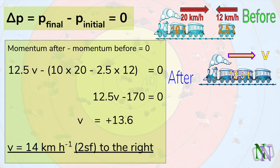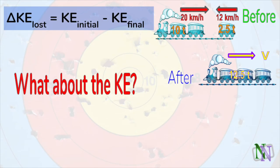And now we find V, which is plus 13.6, which means it points to the right, and we include the unit, which is kilometers per hour. We could convert this to meters per second, if needed, and then we round the final answer to two significant figures, and we state the direction.